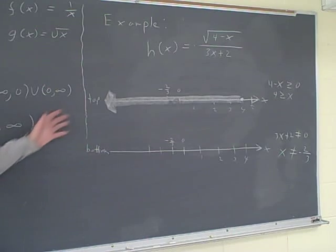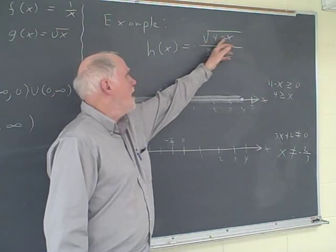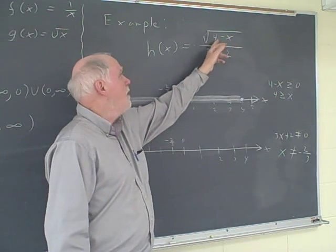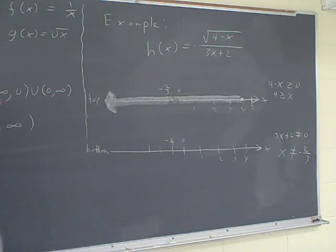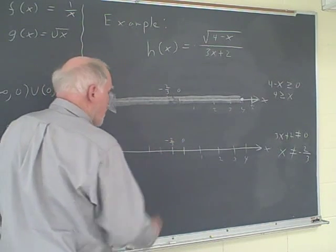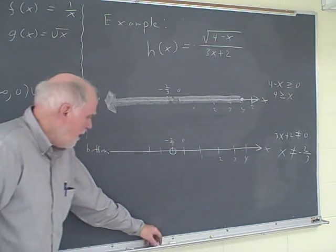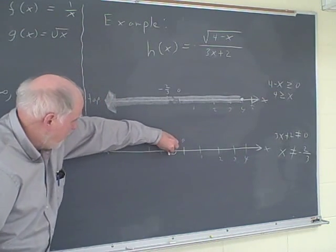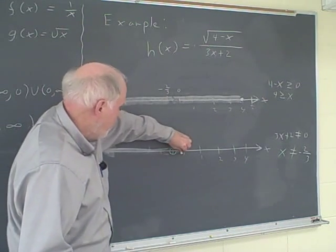Those are the two things we have here that we say are illegal at this stage of the game. We can't put a negative number under an even root, and we can't have 0 in the denominator. So now let's see what this does for us. Here's negative 2 thirds. It can't equal negative 2 thirds. I'm going to put an open hole there. But it can equal any number in this direction, or it can equal any number in this direction.